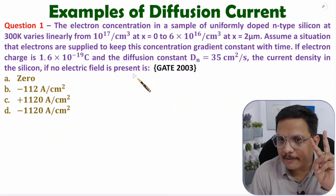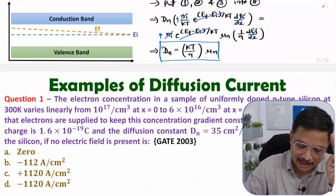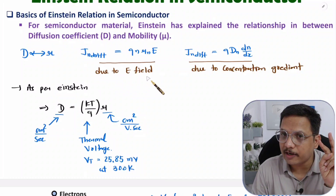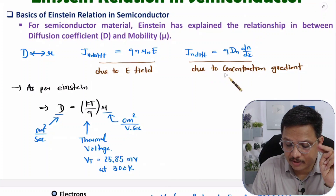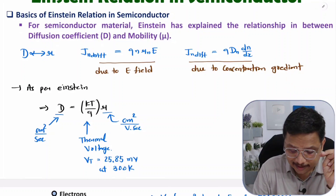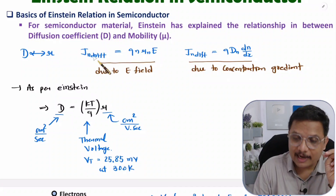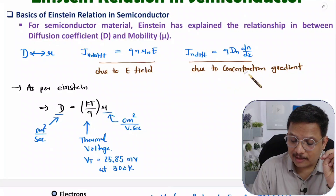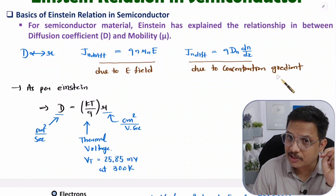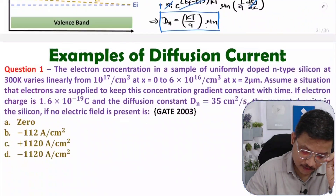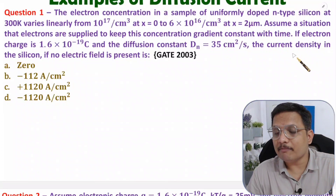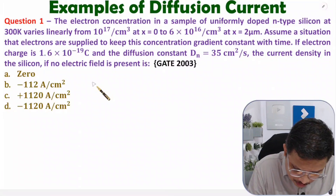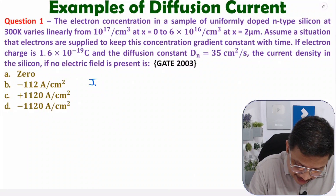There are two types of current: one that happens because of electric field (drift current), and one that happens because of concentration gradient (diffusion current). Since no electric field is present, drift current will be zero. So only diffusion current will exist based on the concentration gradient, and the current density will be based on diffusion current only.